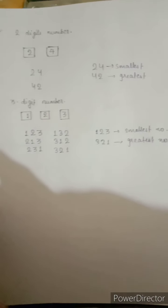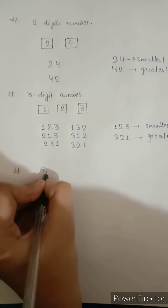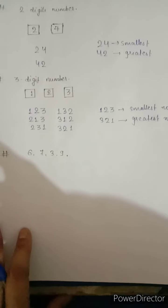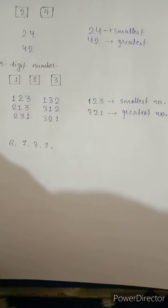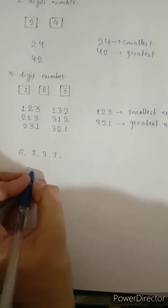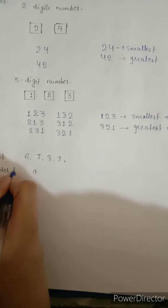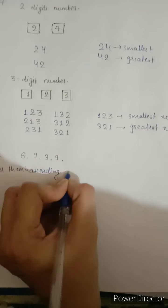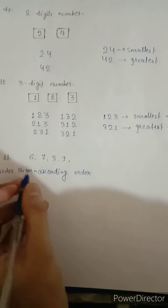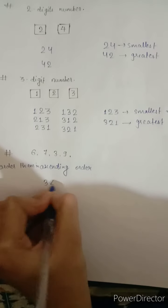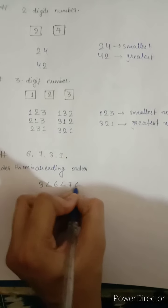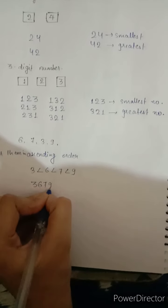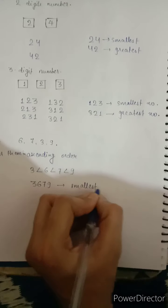Now we have a four-digit number. Suppose the digits are six, seven, three, and nine. We have to make the smallest number using those four digits. To make the smallest number, we put them in ascending order: first three, then six, then seven, then nine. So the number three six seven nine is the smallest number.